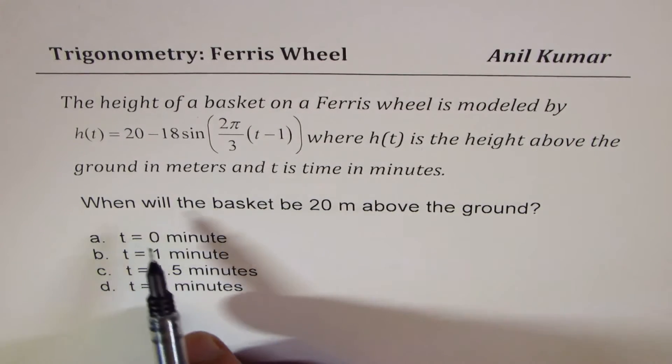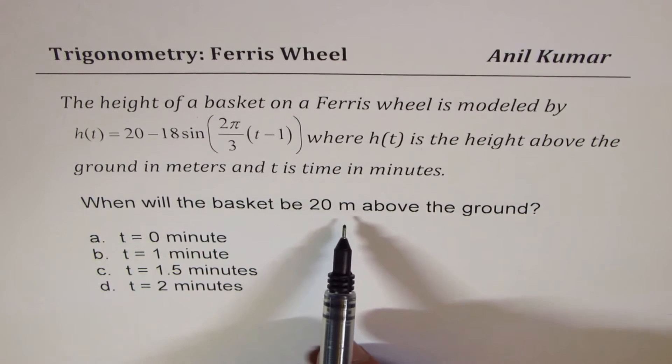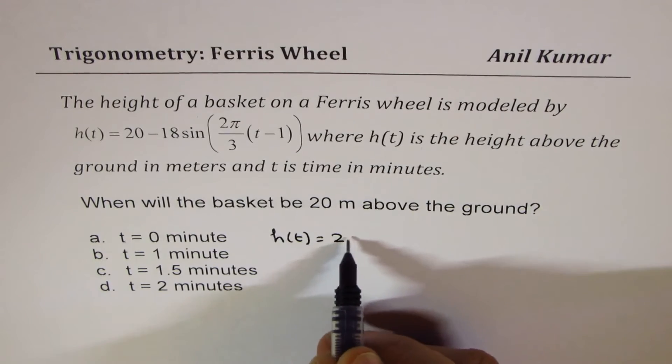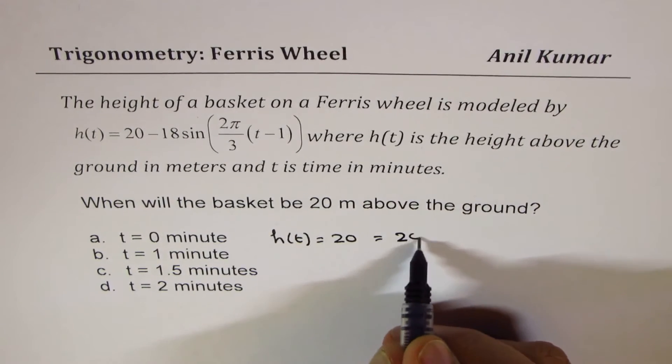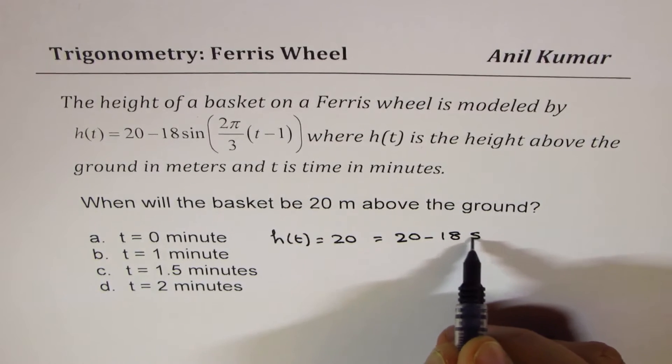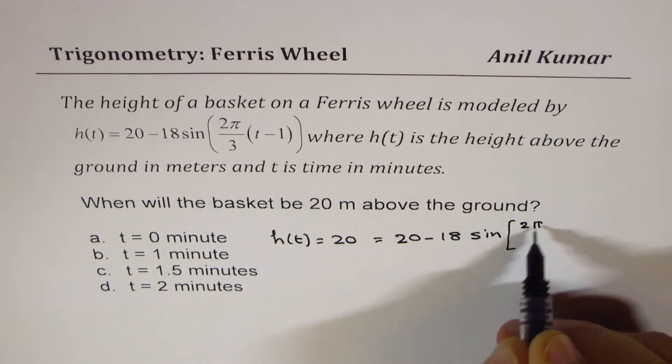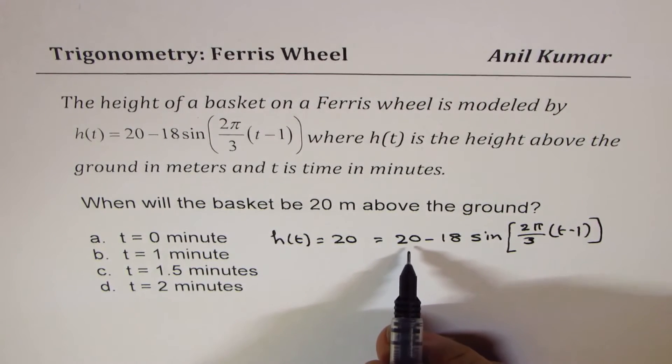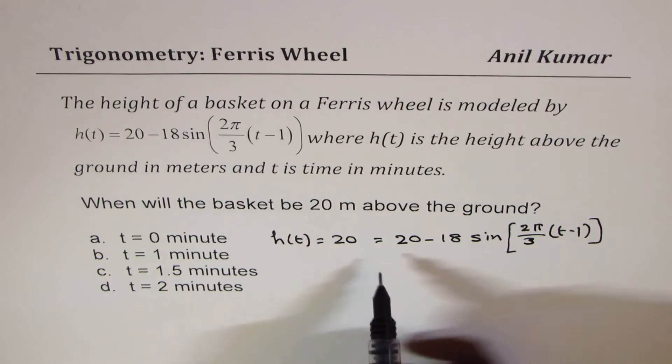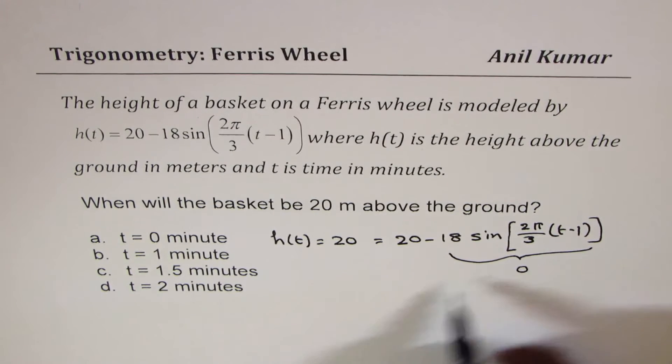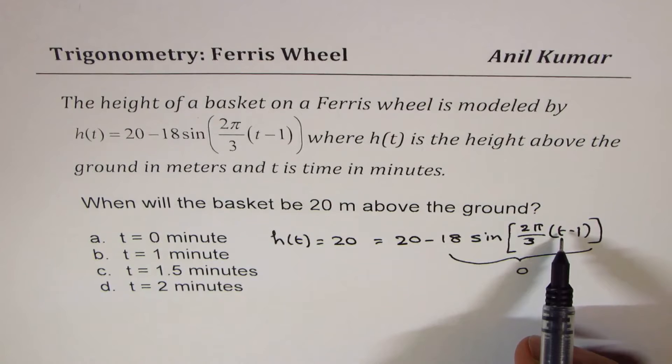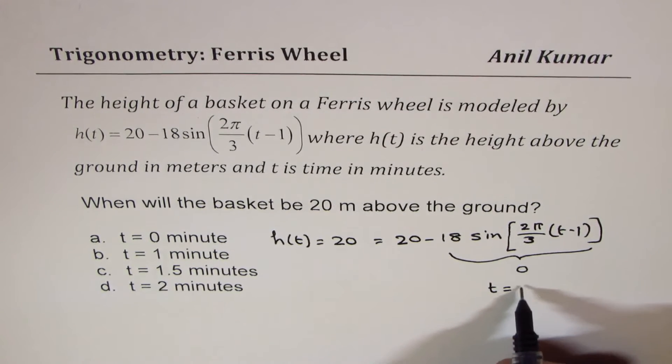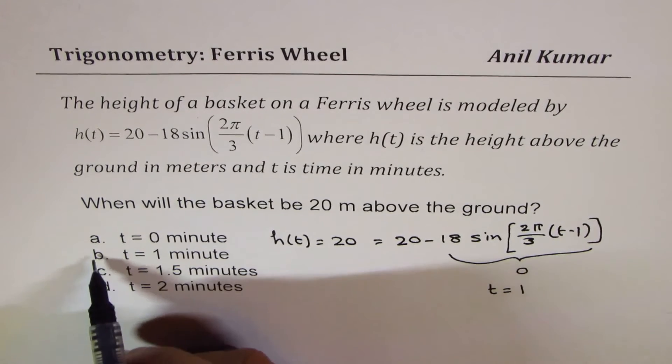The next question here is, when will the basket be 20 meters above the ground? So we want the height h(t) to be equals to 20. The equation is 20 minus 18sin(2π/3(t-1)). Since we want this to be 20, this part should be equal to 0. Now, when can this be 0? It can be 0 when sine is 0. So at t equals to 1, it is going to be 0. So that is our answer.